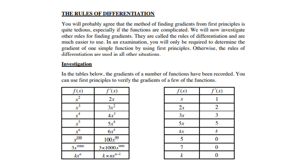Let's look at the table below. The gradients of a number of functions have been recorded. You can use first principles to verify the gradients of a few of them. If you look at the first one: x to the power 2, the derivative will be 2x. x cubed will be 3x squared. x to the power 4 will be 4x cubed. x to the power 5 will be 5x to the power 4. x to the power 6 is 6x to the power 5, and so forth. So, what do you notice? If you look at the bottom one, k times x to the power n — you multiply n with k and you subtract 1 from n. So, that is the general rule.